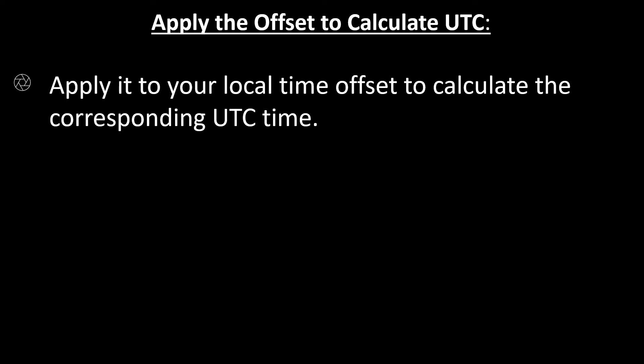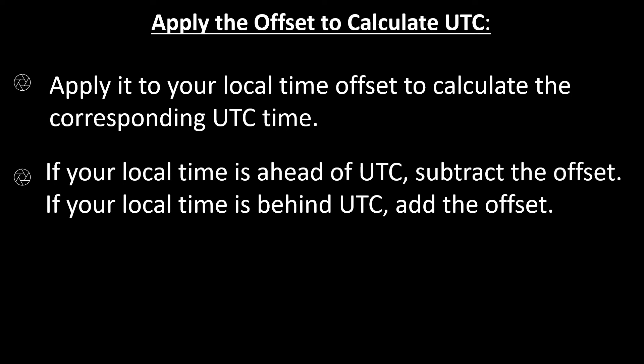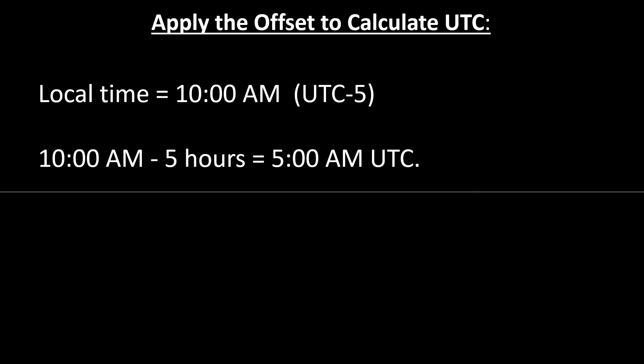Now let's learn how to apply the offset to calculate UTC. Once you know the time zone offset, apply it to your local time to calculate the corresponding UTC time. If your local time is ahead of UTC, subtract the offset. For example, if your local time is 10 AM and you are in a time zone with a UTC offset of minus 5 hours, you would subtract 5 hours from your local time — meaning 10 AM minus 5 hours equals 5 AM UTC.